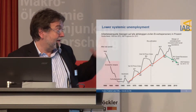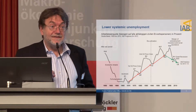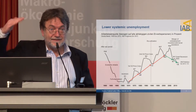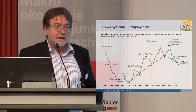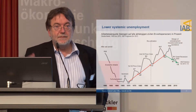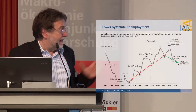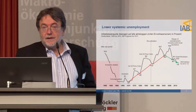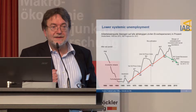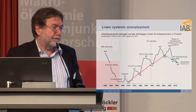What I think is quite important is this very long perspective on unemployment in Germany. What you see after 1970 or so is this hysteresis effect — the stepwise increase in systemic unemployment. After every crisis, the minimum unemployment in a boom period was higher than it was in the period before. After 2005, for the first time, the systemic unemployment decreased again. This can be considered a success — negative hysteresis, so to speak.